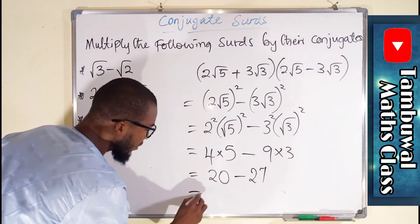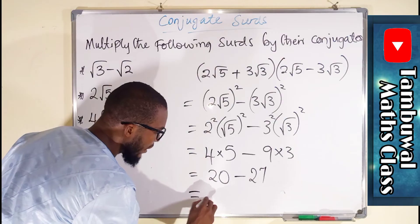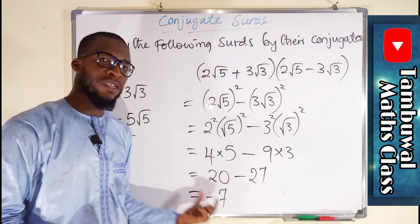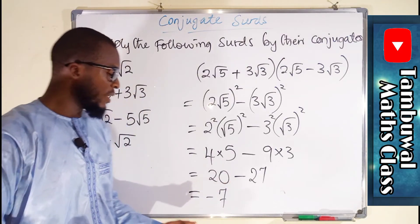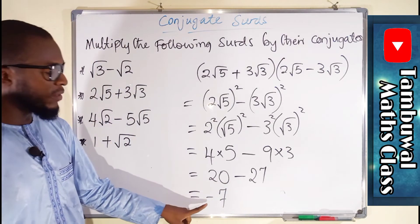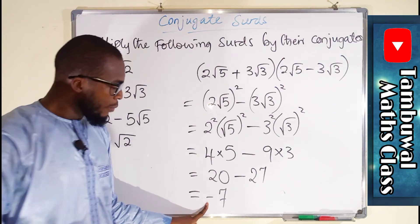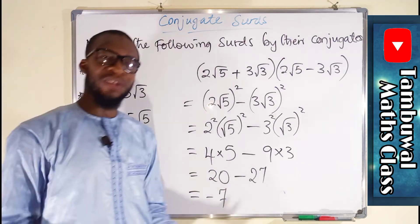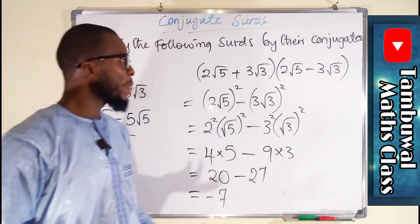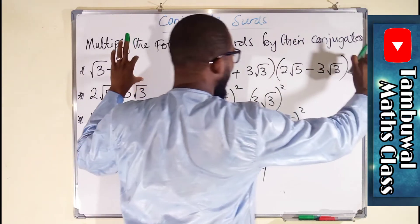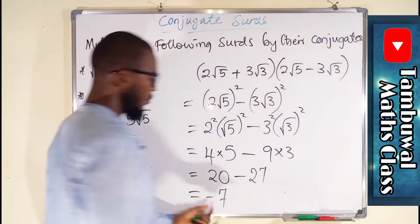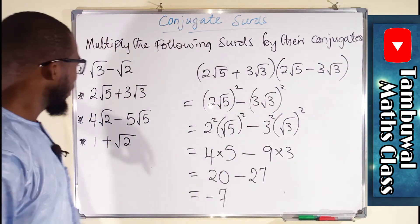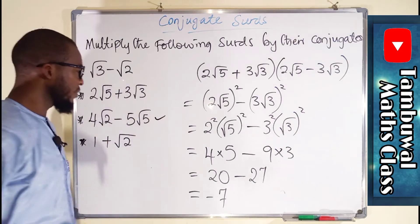We get 20 minus 27, which gives negative 7, because 27 is greater than 20 and hence the result must be negative. But negative 7 is still a rational number. So after multiplying this surd by its conjugate we obtain a rational number.